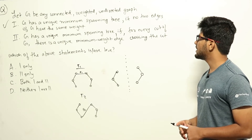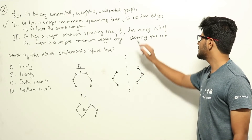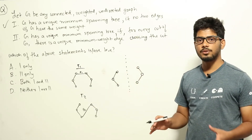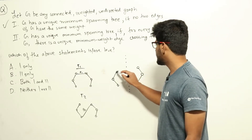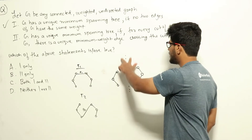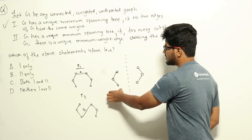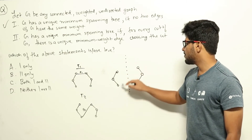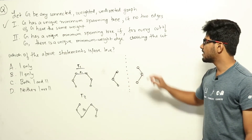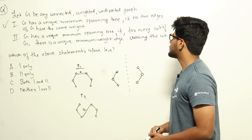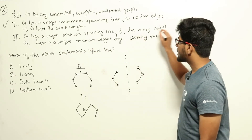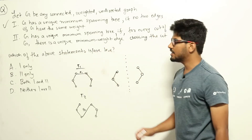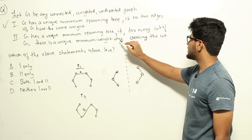Statement 2: G has a unique minimum spanning tree if for every cut of G there is a unique minimum weight edge crossing the cut. A cut means dividing the set of vertices into two parts. For example, set aside some vertices and the remaining vertices form the other set. A cut involves removing all edges joining these two sets of vertices. Statement 2 says that for every such cut inside G, there is a unique minimum weight edge crossing that cut.